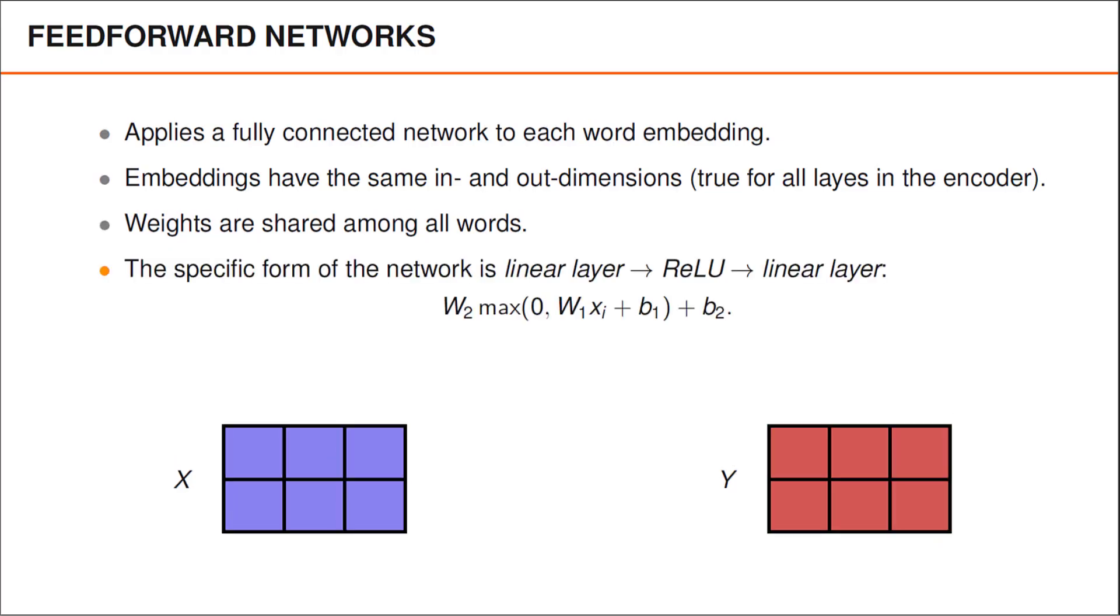The specific feedforward network used in the original transformer paper contains a linear layer, followed by a rectified linear unit, and another linear layer. We can express this using a single equation as follows. Here W1 times xi plus b1 corresponds to the first linear layer. We then compute an element-wise maximum of 0 and the elements in that vector, which corresponds to the rectified linear unit. And finally, we multiply the result by a matrix W2 and add a bias b2, which is the second linear layer.